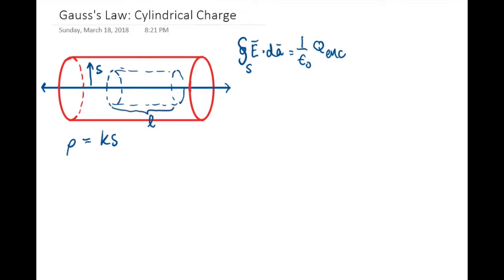First we'll find the total charge enclosed in this surface, and we'll call the radius of our Gaussian cylinder s. We don't actually need to use the radius of the cylinder of charge.